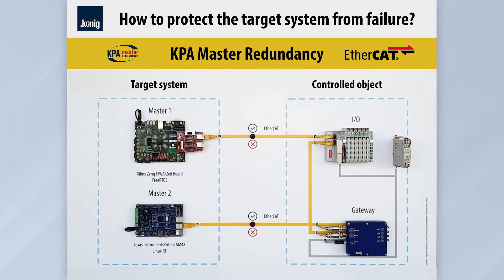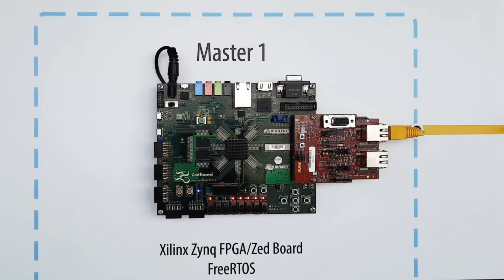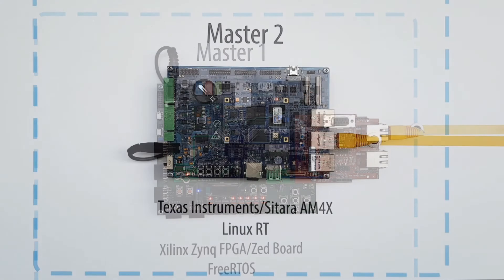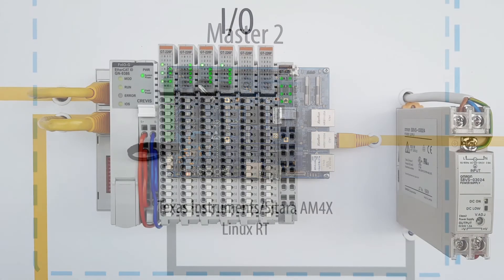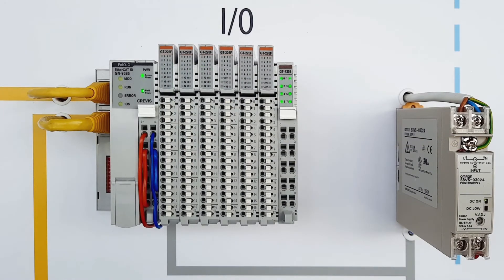The demonstrated system is based on the ATHICET fieldbus and consists of the following devices: a Field Programmable Gate Array ZYNQ board manufactured by Xilinx with an installed free RTOS operating system and a proprietary ATHICET master software stack; a Field Programmable Gate Array Sitara manufactured by Texas Instruments using an installed Linux operating system and ATHICET master software stack; and slave devices including a programmable logic controller supporting ATHICET and Modbus TCP protocols and 6 I/O devices made by the Korean manufacturer Crevice.